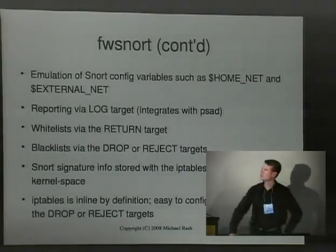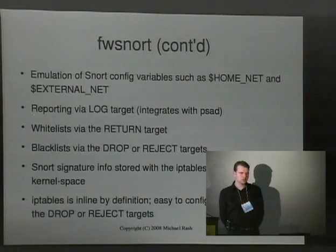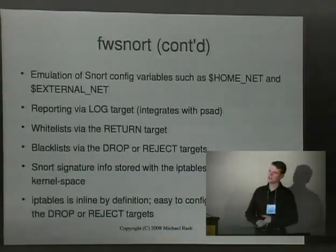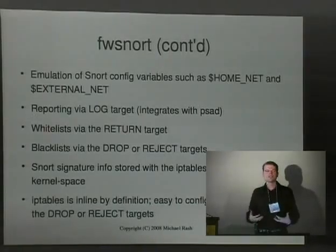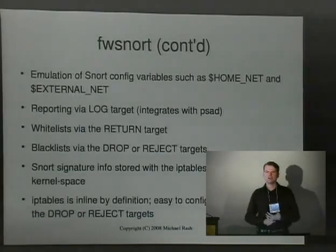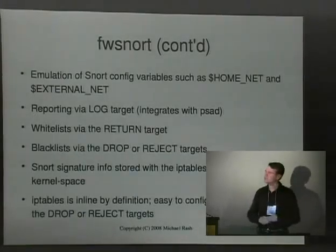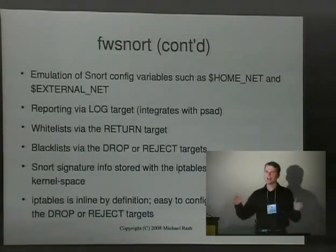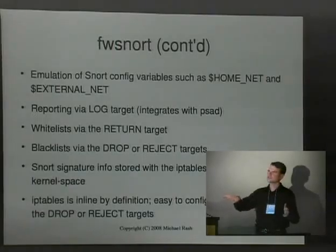Things we can emulate within FWSnort include evaluation of the familiar HOME_NET and EXTERNAL_NET variables, as well as HTTP_SERVERS and similar variables. In terms of IDS, we need some reporting functionality. The LOG target in IP tables provides that to some degree, and it integrates with another of my projects called PSAD. We can at least generate events via the log target that are indicative of attacks, as long as FWSnort has told us when packets contain things that look like Snort signatures within network traffic.